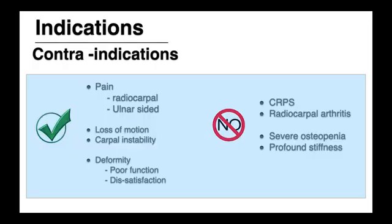The main indication for doing an osteotomy correction for distal radius malunion includes pain, which is most commonly ulnar-sided and sometimes from the radiocarpal joint. Other indications include loss of motion at the radiocarpal joint and at the DRUJ, carpal instability which is often adaptive, and most commonly deformity which leads to poor function and dissatisfaction. Absolute contraindications include complex regional pain syndrome and radiocarpal arthritis. Severe osteopenia and profound stiffness are also relative contraindications.